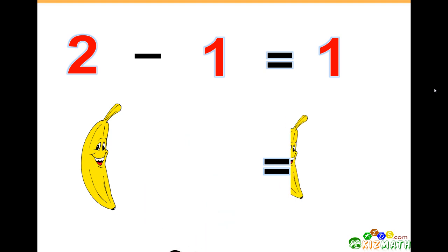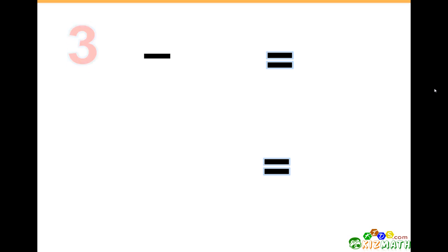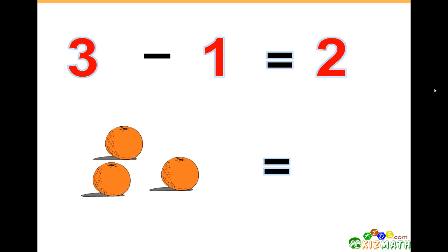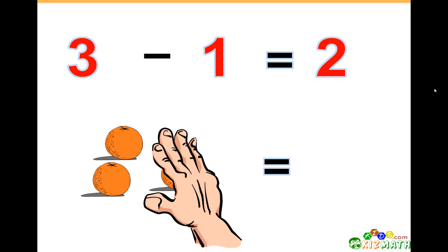we have only one banana left. 3 minus 1 equals 2. If we have three oranges and we take away